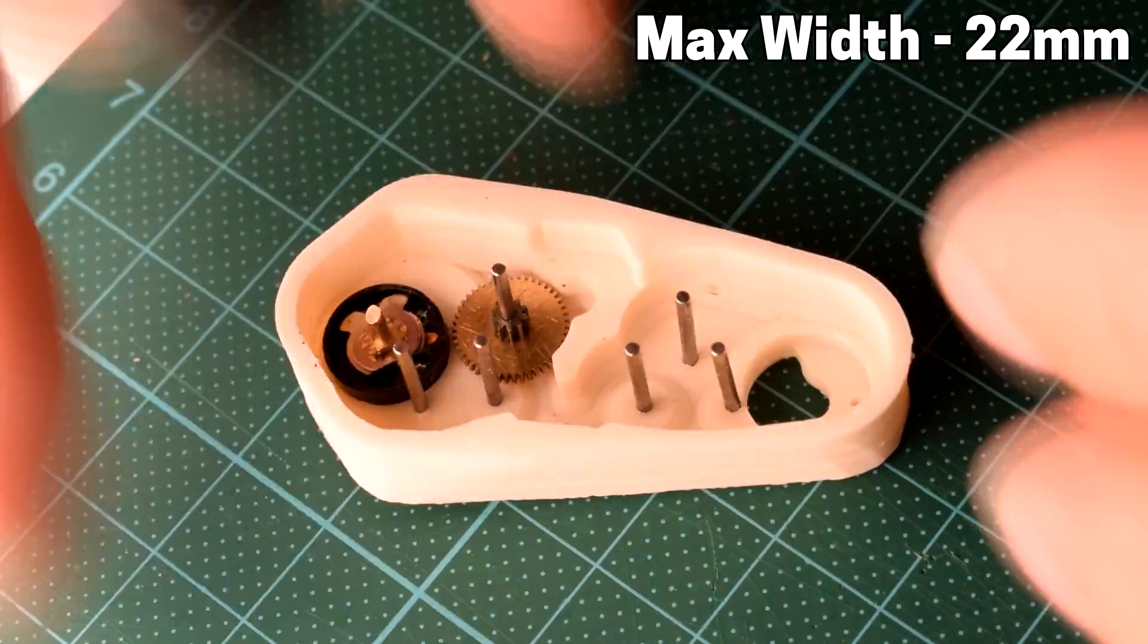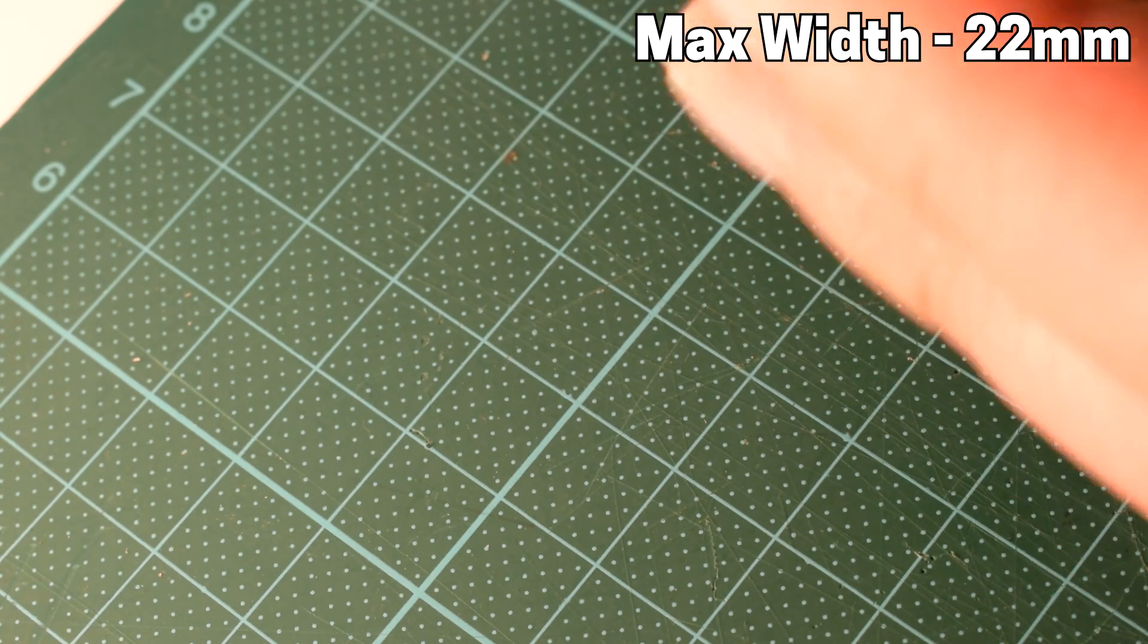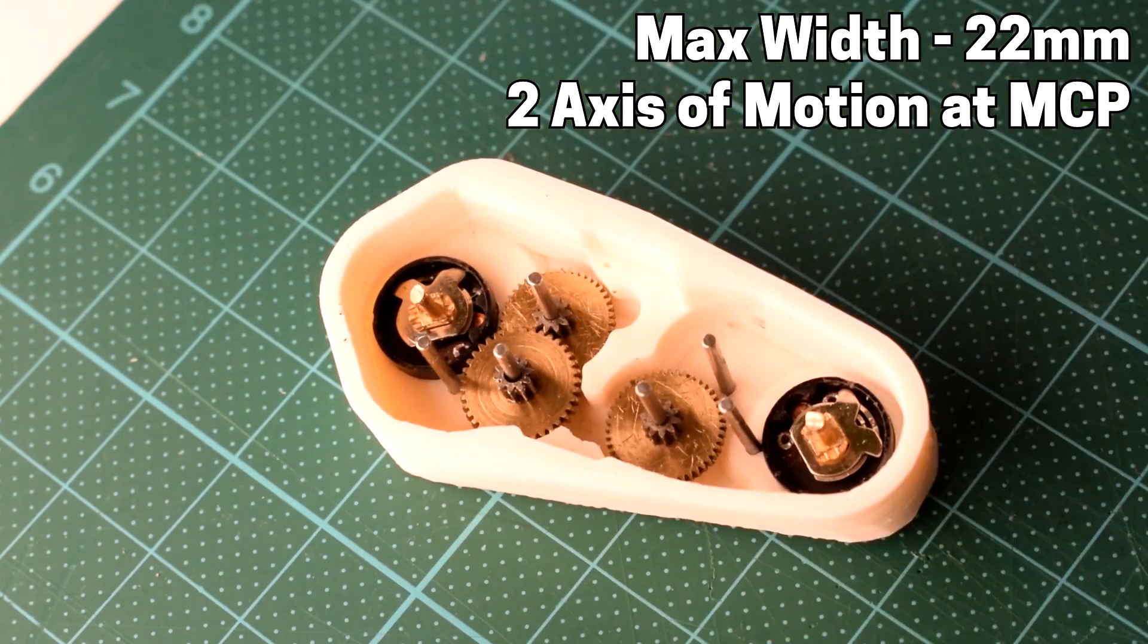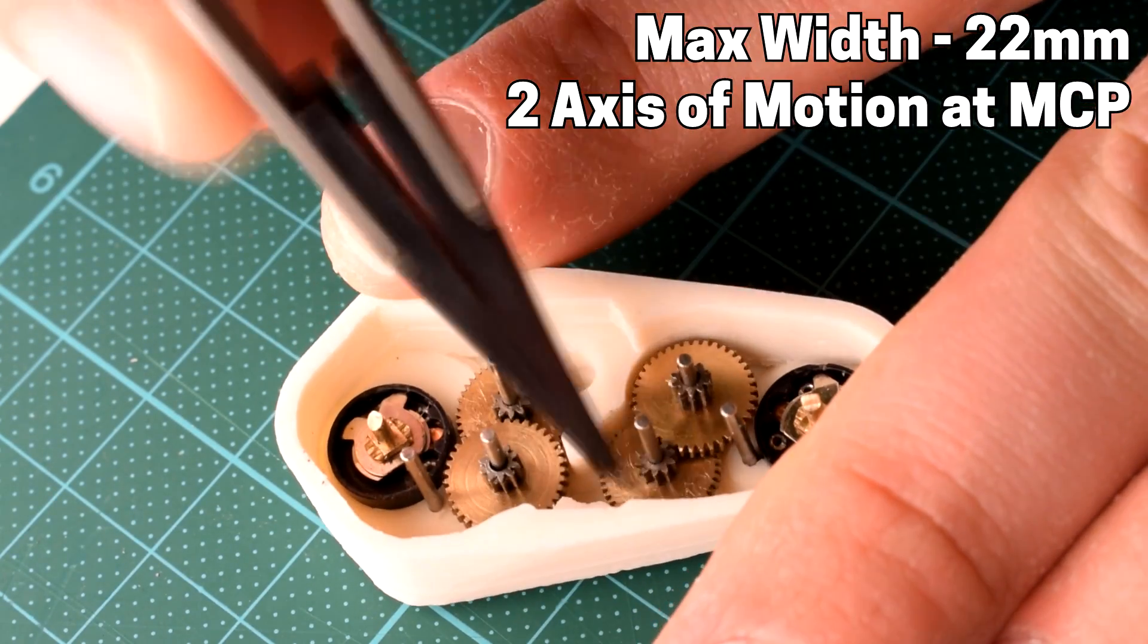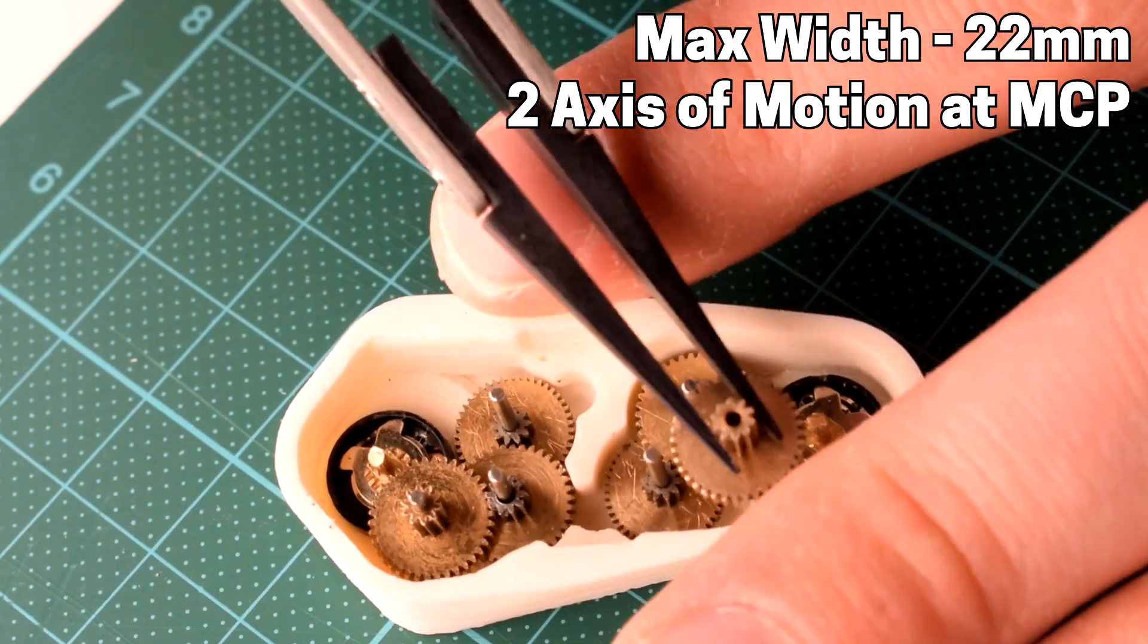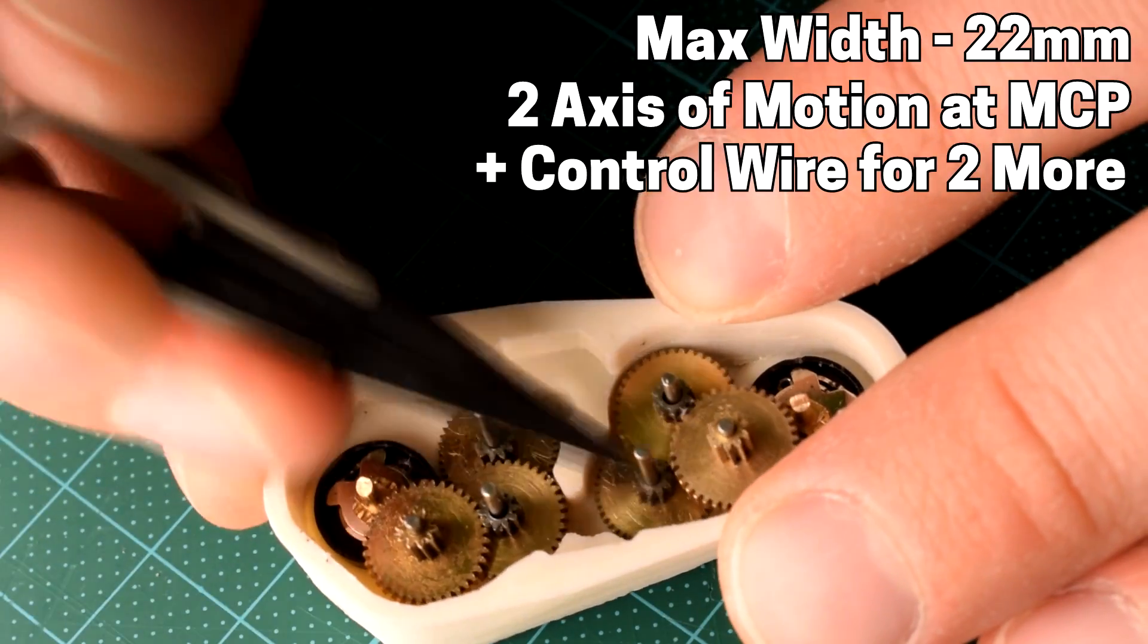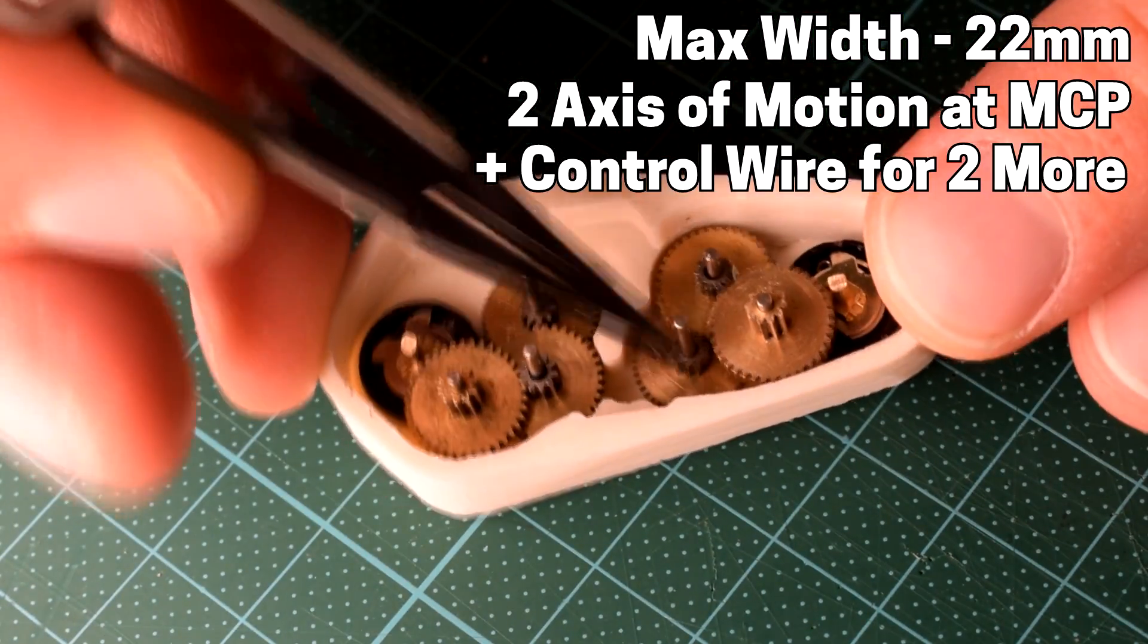And in this joint space, there has to be two axes of motion, which is the lateral side to side as I mentioned and also the flexion and extension. But it also needs to carry control wire for two additional degrees of freedom, which are the joints that I designed in the last video.